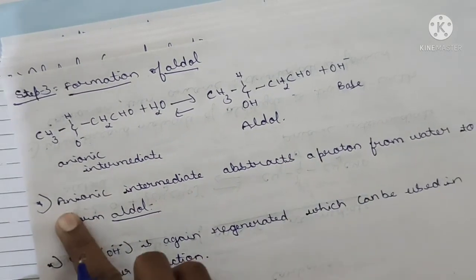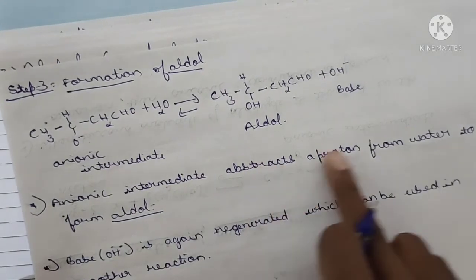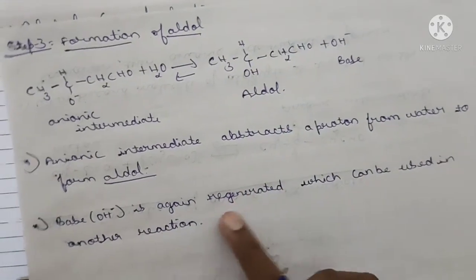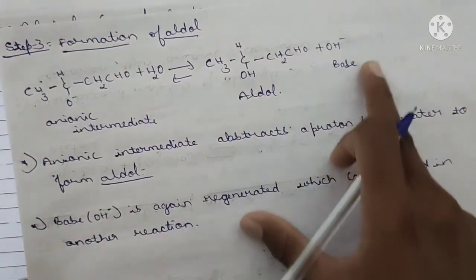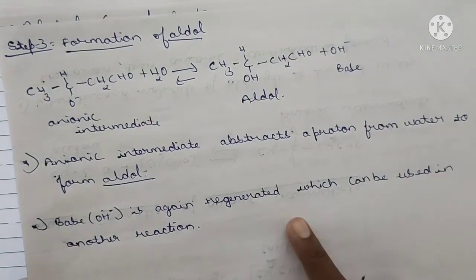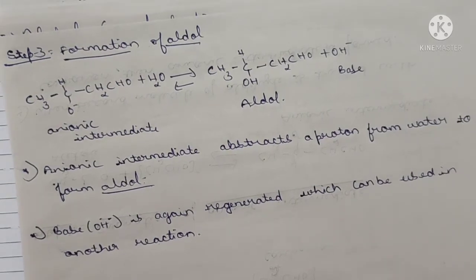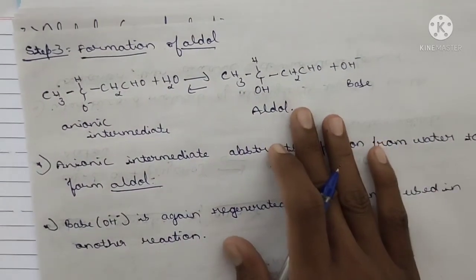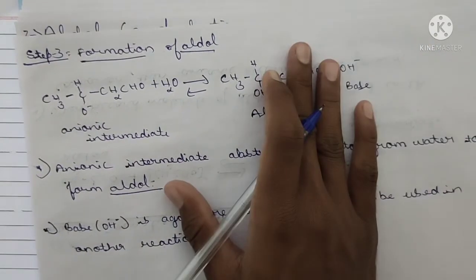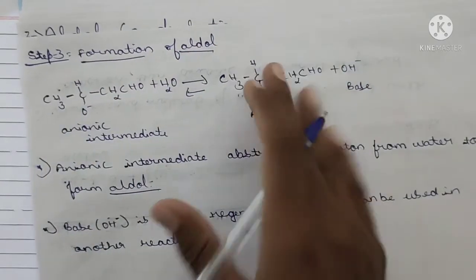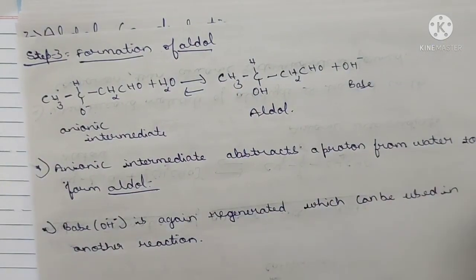The base is regenerated again in the formation of the carbanion. The anionic intermediate abstracts a proton from water to form aldol, and OH⁻ base is liberated and can be reused in another reaction. To summarize, there are three steps: step one — formation of carbanion (negative charge); step two — formation of anionic intermediate; step three — formation of aldol. Practice these steps once or twice and you can easily master this.